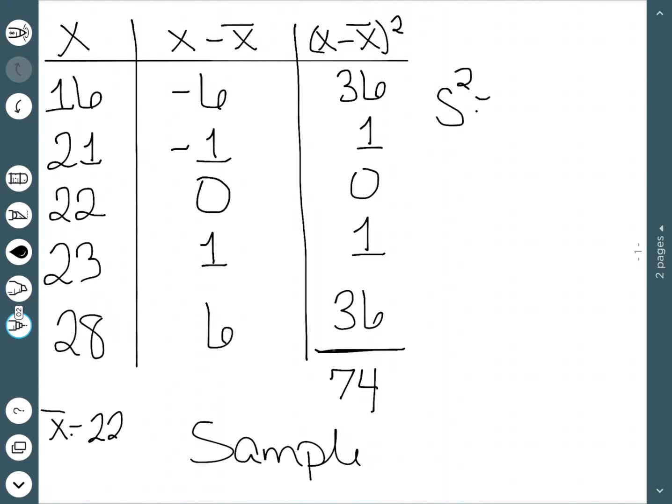Sample variance says take the number we just found and divide by the number of things we have minus 1. You'll notice we have 5 data points here, so we need to divide by 4. This gives us our sample variance of 18.5.